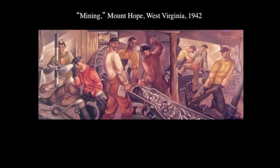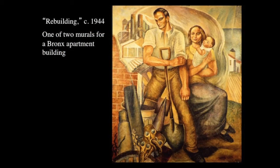Lenson as a New Deal artist — one of the best pieces of mural art is this one from West Virginia. It's a mining scene and it's still there; you can Google it. This also made it onto the poster for the show — it's one of two murals for an apartment building in New York, 1944, getting toward the end of the New Deal era. The same themes I've been talking about all along, and it's in a museum in Florida nowadays.